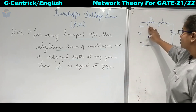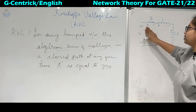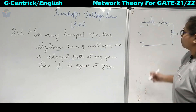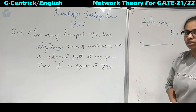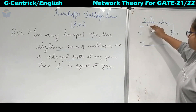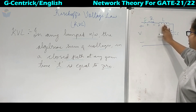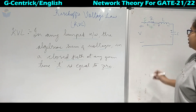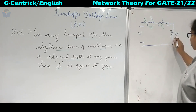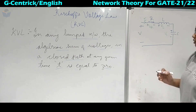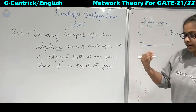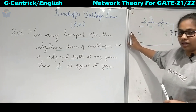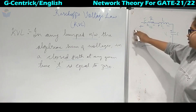Who decides the direction of these signs? It is the current. When we have taken this as positive terminal, the current must enter at the positive terminal. This is the current I — total current I flowing in this loop. There will be a voltage drop across each element: resistor, inductor, and capacitor. They are passive elements and energy-absorbing elements. The voltage drop across R is VR, across the inductor is VL, and across the capacitor is VC.